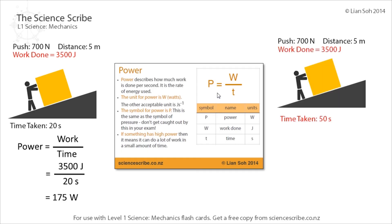Now let's compare it to another example. Let's say exact same person, exact same box, but instead of 20 seconds we're going to say it takes them 50 seconds to move that box up the ramp.